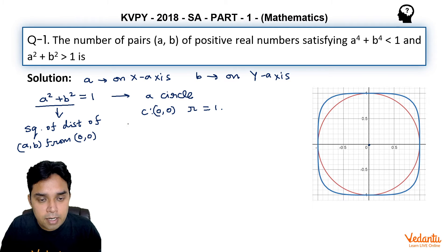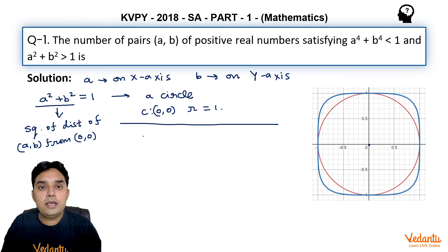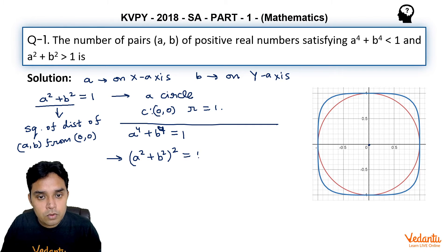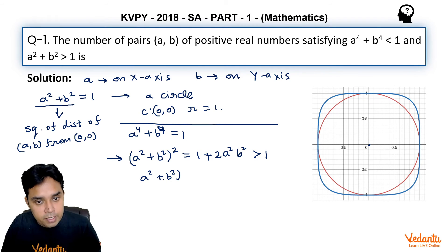Now let us understand what will be the graph of a⁴+b⁴=1. We can write this as (a²+b²)²=1+2a²b². Because a and b both are positive real numbers, it will be greater than 1 strictly, which means for a⁴+b⁴=1, a²+b²>1.